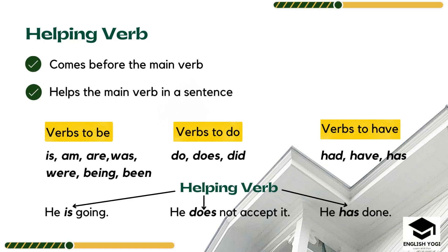Moving ahead, helping verb comes before the main verb and helps the main verb in the sentence. Helping verbs are divided into three subcategories: to be form, to do form, and to have form. The to be form includes: is, am, are, was, were, being, and been. The to do form includes: do, does, and did. The to have form includes: had, have, and has.